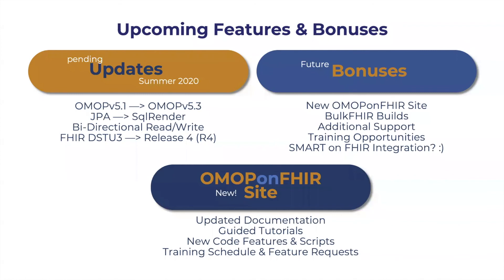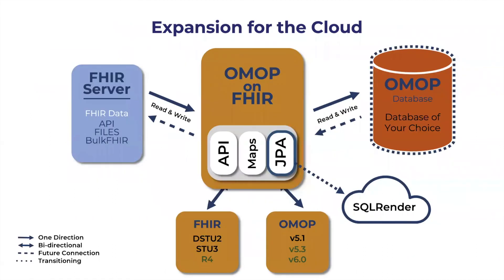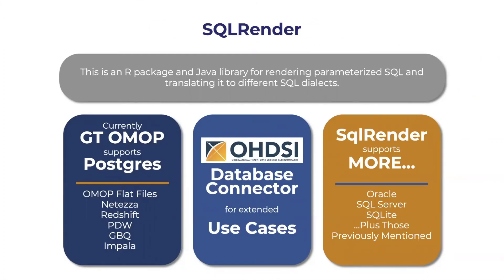Now let's talk about new features coming for OMOP on FHIR. By the end of the summer we're anticipating having OMOP version 5.3 publicly available as well as FHIR Release 4, including cross-mappings among the new and old versions. Additionally, since our current version only supports bi-directional read and write capabilities with JPA, we're working on providing SQL Render as an option to make it easier to integrate with cloud environments. So far we've built one direction from FHIR to OMOP, and we're working towards the counter direction. SQL Render is an R package and Java library for translating different SQL dialects; with JPA alone we don't have the SQL statement construction to do this translation the same way, so we're building it out ourselves.